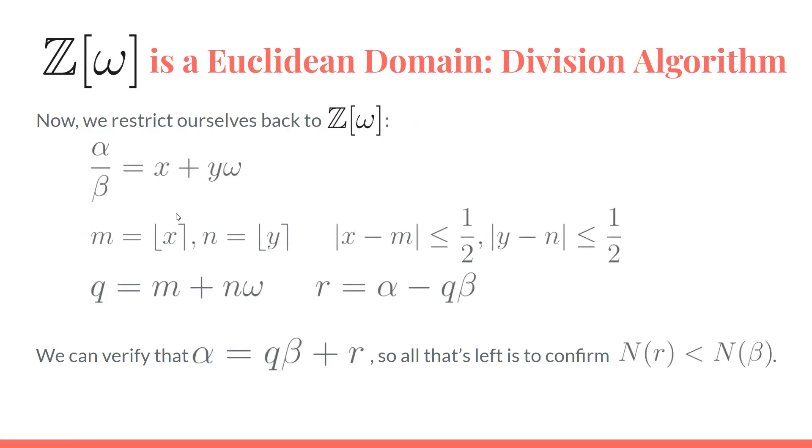We still have this x + yω, and we're going to round those to the nearest integer. We'll choose m and n such that the difference between them and their respective values is less than or equal to one half. Now we can write q = m + nω, and we'll write r to be α - qβ. That allows us to immediately conclude that α = qβ + r.